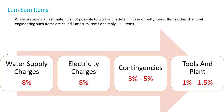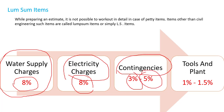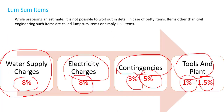The next lump sum item is water supply charges — we take 8% of total cost. Electricity charges — we also take 8% of total cost. During execution of the project we also have contingencies, for which we take 3% to 5% of total cost. We also include tools and plants at 1% to 1.5%. So the lump sum items are: work charge establishment, water supply charges, electricity charges, contingencies, and tools and plants.